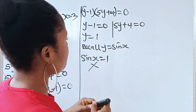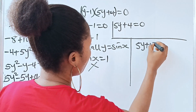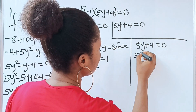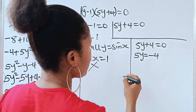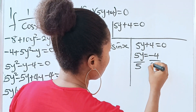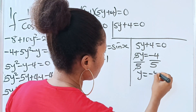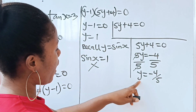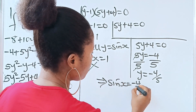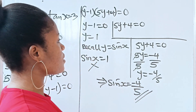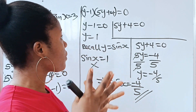Solving the second factor: 5y plus 4 equals 0, so 5y equals minus 4, giving y equals minus 4 over 5. Recalling that y equals sine x, this implies that sine x equals minus 4 over 5. This particular solution is valid. Thank you so much for watching.